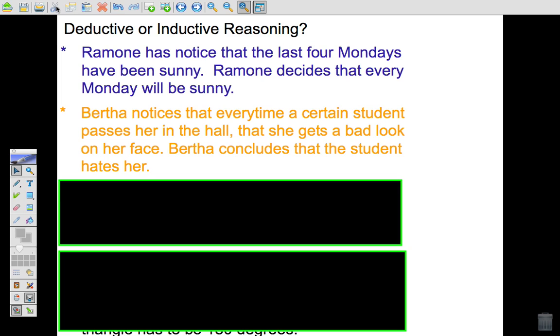Now is Bertha's line of reasoning from facts or is it from something she observed? And again, the answer is it's based on something she's observed. She's observed this student. There's nothing that says that it's a fact that this student dislikes her. Bertha just observes this and she bases her reasoning on this. So this would be inductive reasoning.